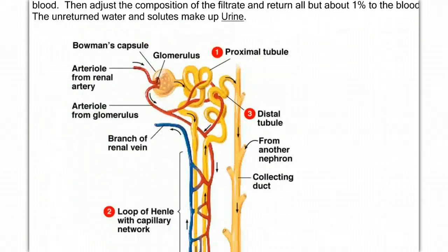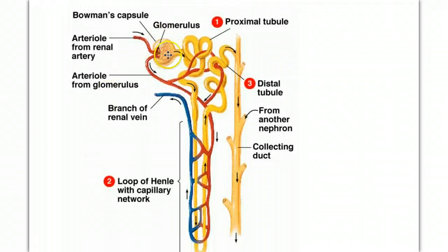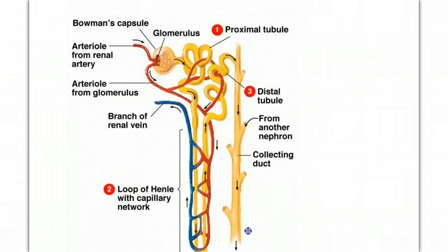In a quick recap of the anatomy of a nephron, we have the Bowman's capsule, which is where the filtering occurs, the proximal convoluted tubule, the loop of Henle, the distal convoluted tubule, and the collecting duct.